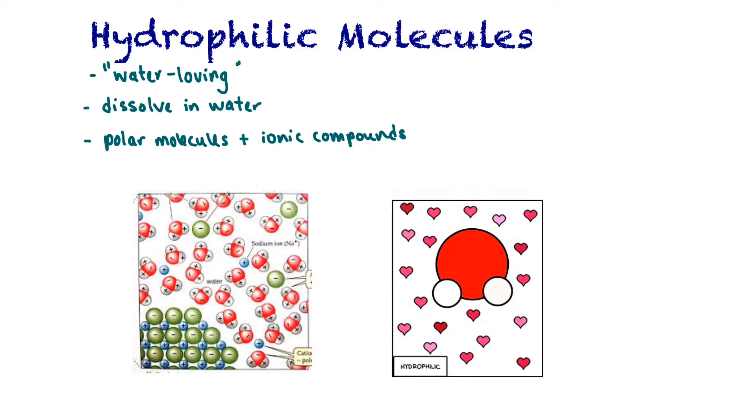Hydrophilic molecules, if we break down that word, hydro means water, phile or philic means lover of. So water-loving molecules. Hydrophilic molecules dissolve in water or interact with water. Hydrophilic molecules would include polar molecules and ionic compounds. In this example, we have water, which is represented by the red and white molecules, and we have a crystal of salt here, sodium chloride. Over time, the chloride ions are going to interact with the positive dipoles of water, and the sodium ions are going to interact with the negative dipoles of water, so with the oxygen end of the molecule. This would happen over and over again. Ionic compounds and polar molecules are hydrophilic.